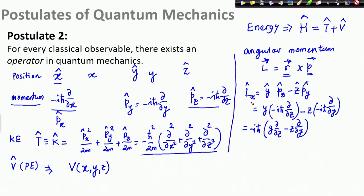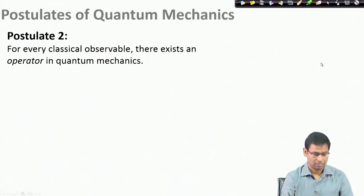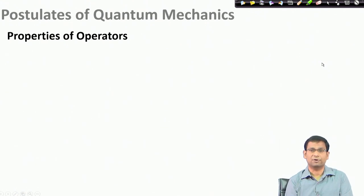What we have learned is that for every classical observable that we wish to know about a quantum mechanical system, quantum mechanics offers an operator. The wave function contains all the information, but to get any idea about any particular observable, we must bring that quantum mechanical operator which corresponds to that classical observable. Next we will discuss some properties of operators.